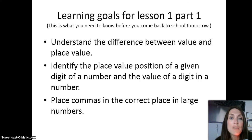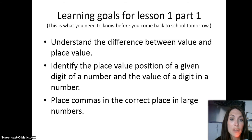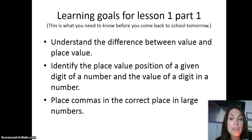In your math journal, you will need to write down the learning goals for Lesson 1, Part 1. The learning goals are: understand the difference between value and place value; identify the place value position of a given digit of a number and the value of a digit of a number; and place commas in the correct place in large numbers.